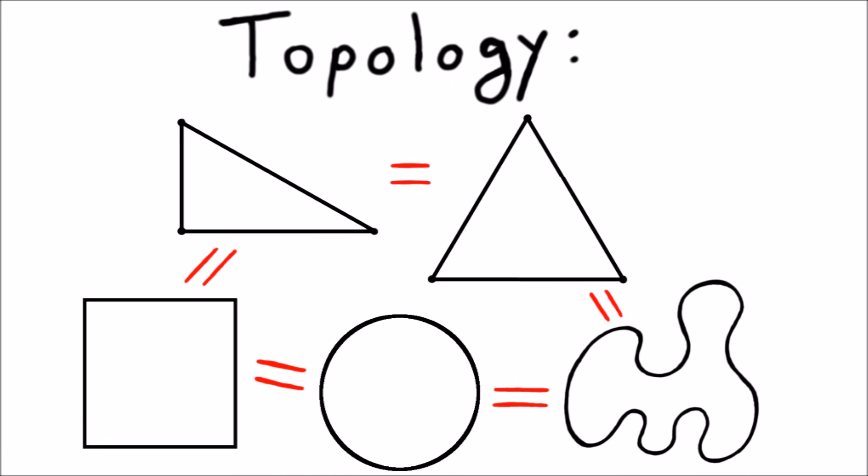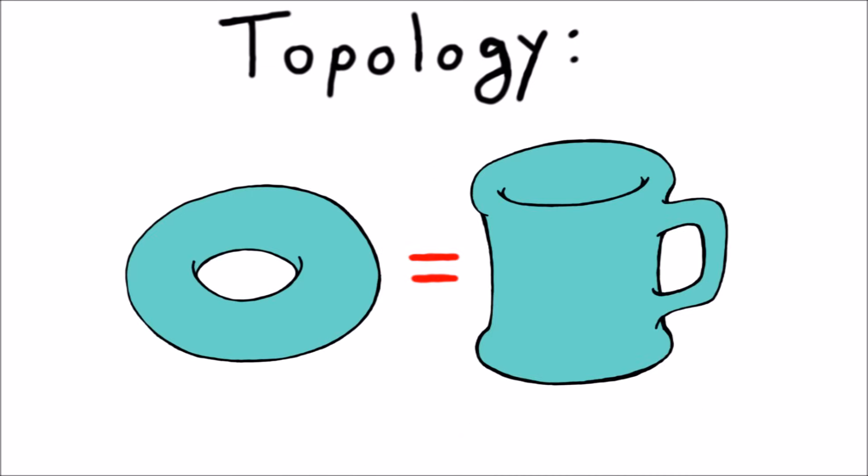There's a joke people tell to illustrate this difference. It's not actually very funny but it gets the point across. The joke is that a topologist is someone who can't tell the difference between a donut and a coffee cup. The idea is that if your coffee cup is made of very squishy rubber, then when you're tired of drinking coffee from it,